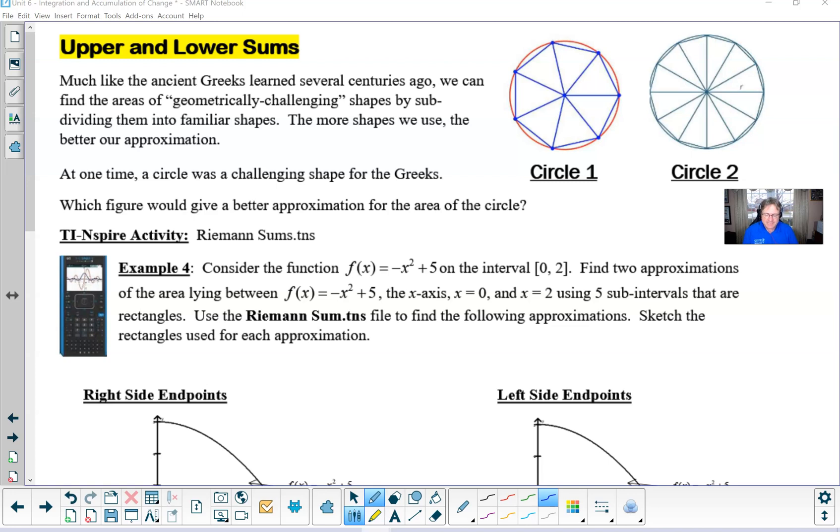Much like the ancient Greeks learned several centuries ago, we can find the areas of geometrically challenging shapes by subdividing them into familiar shapes. The more shapes we use, typically the better our approximation.